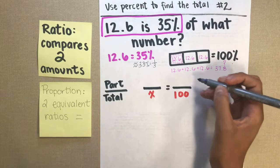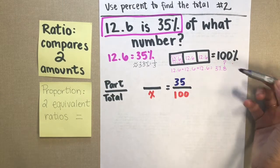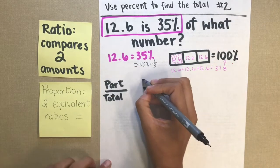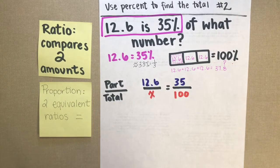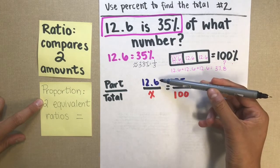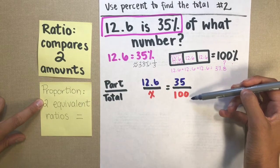Well, I want to match percent with percent. So I have 35%. And then I do know this number. It's 12.6. So now you've set up your proportion, your two equivalent ratios. 12.6 out of x is equal to 35 out of 100.